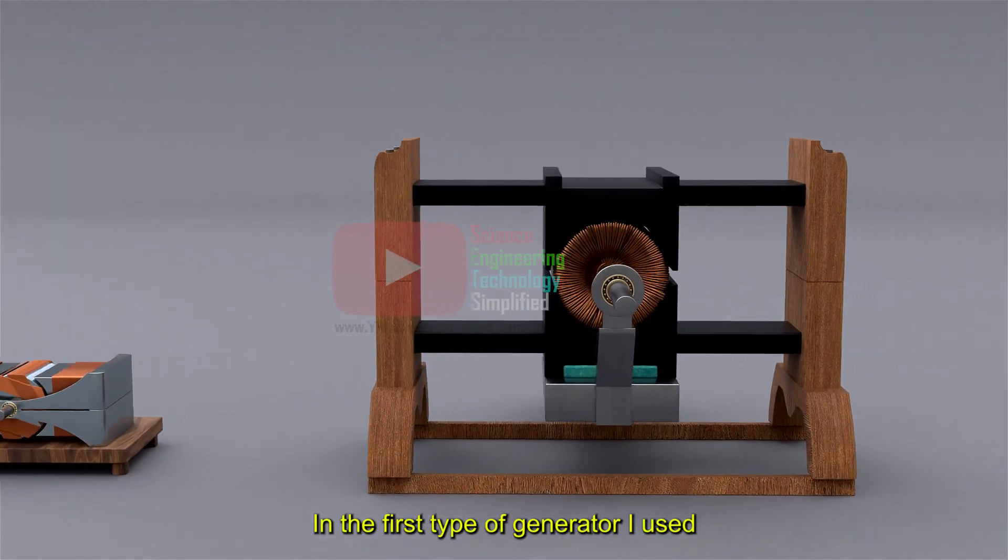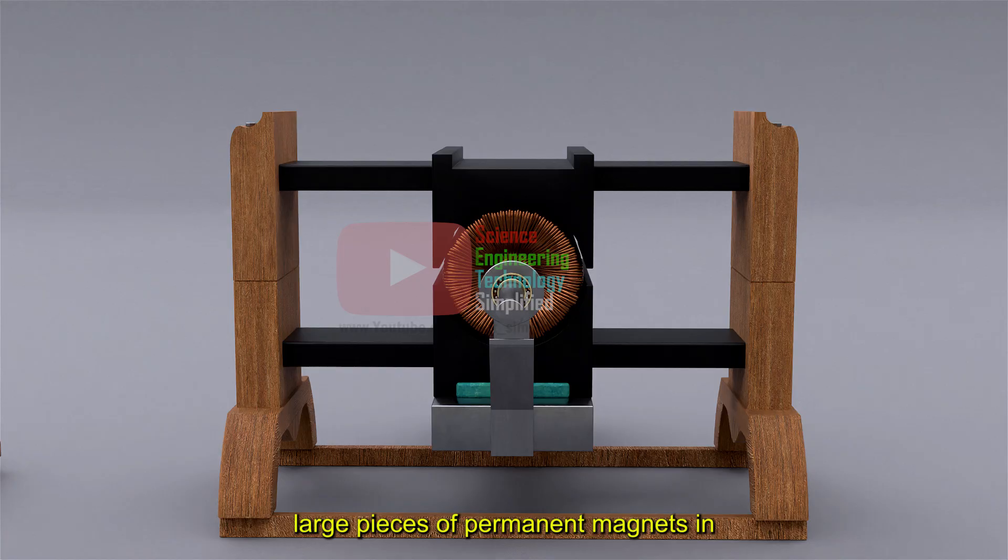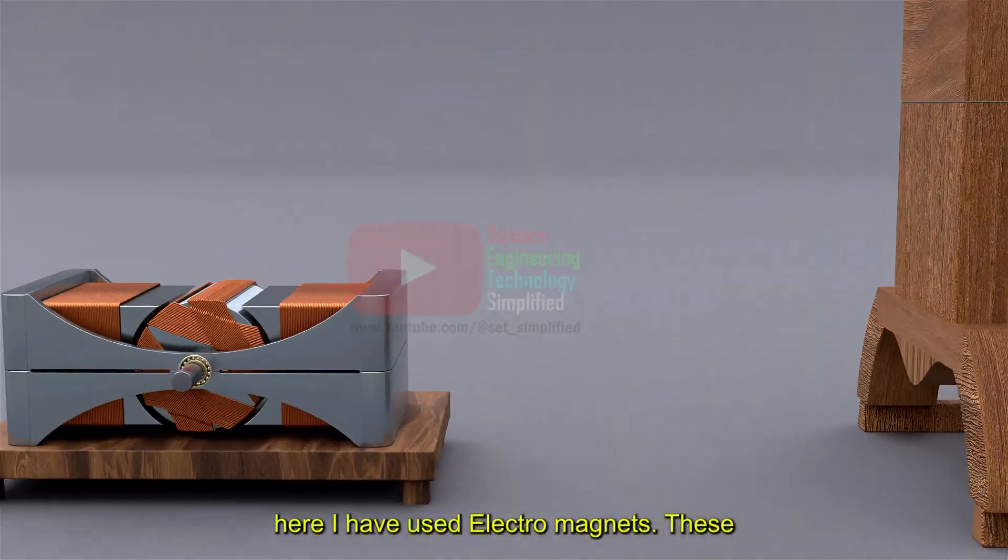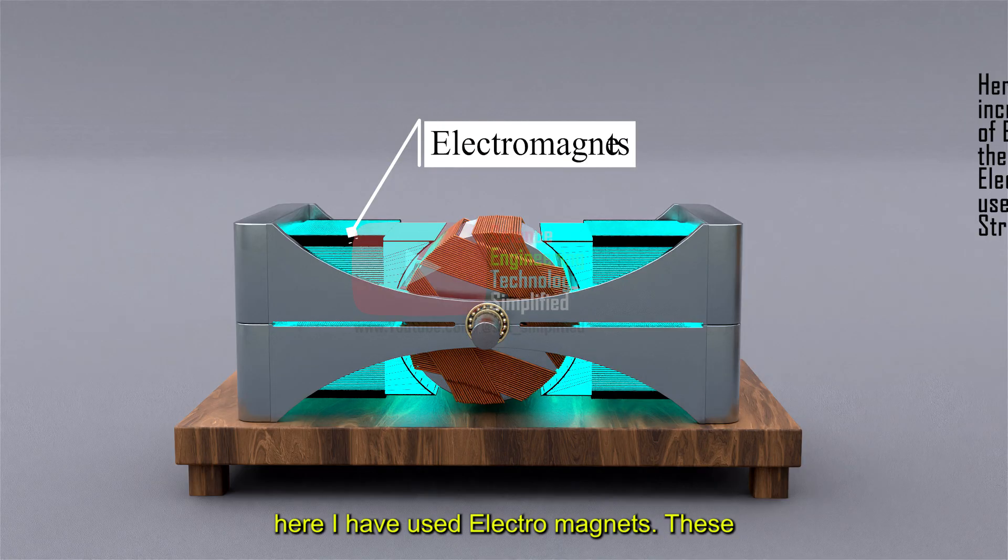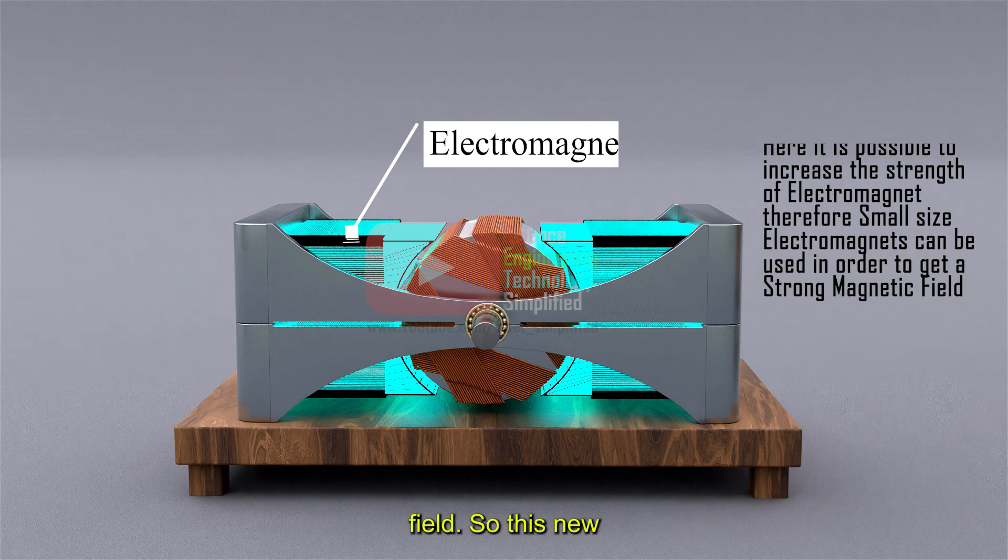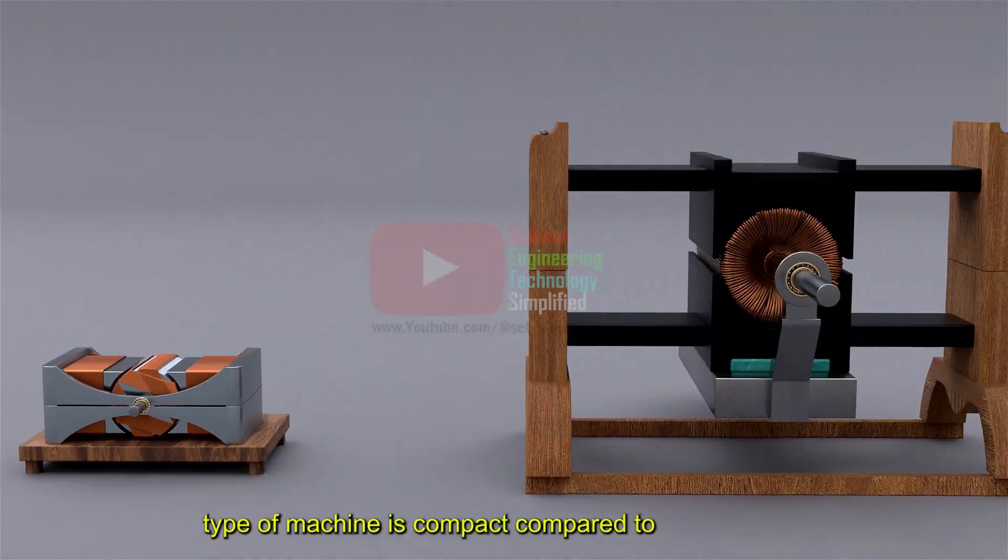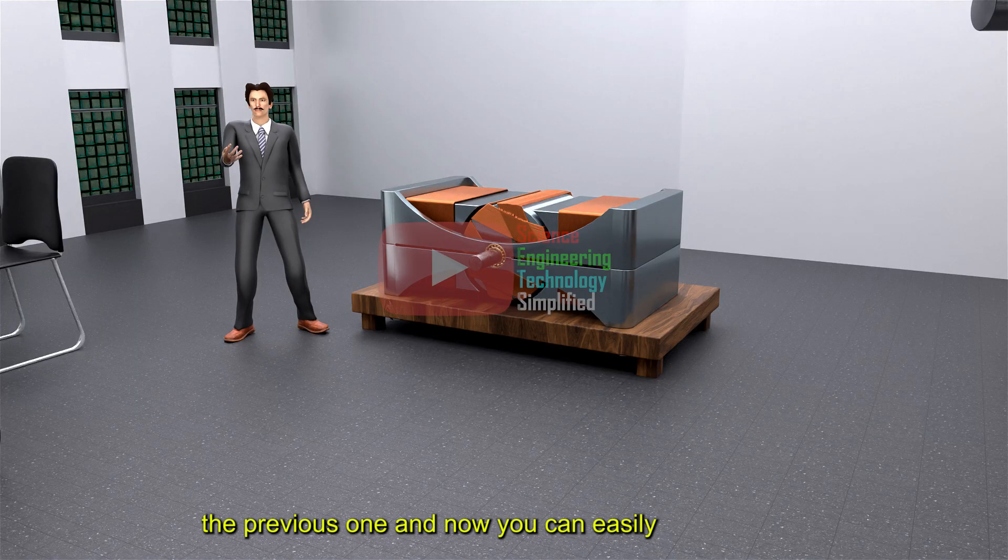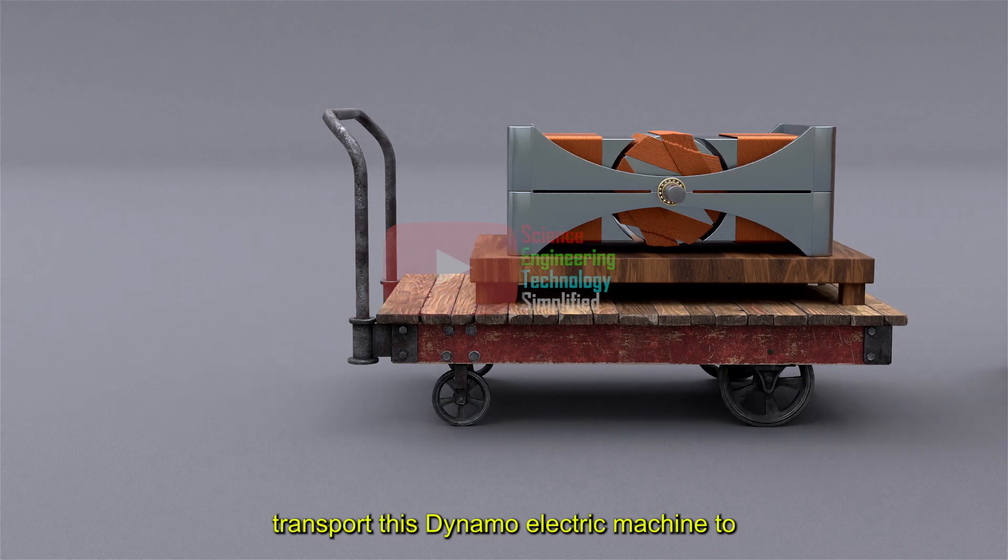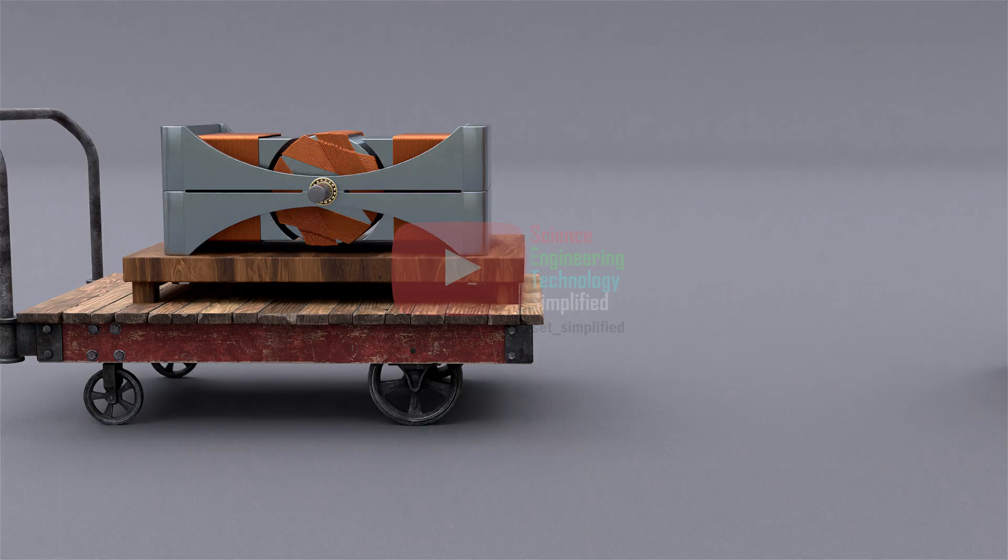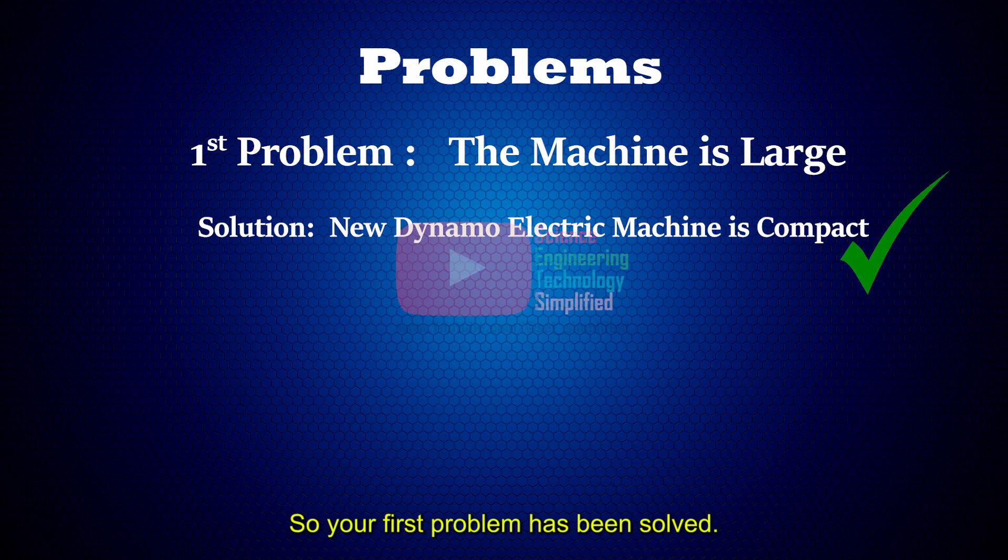In the first type of generator, I used large pieces of permanent magnets in order to get a strong magnetic field, but here I have used electromagnets. These electromagnets are small in size but can generate the same amount of magnetic field. So this new type of machine is compact compared to the previous one, and now you can easily transport this dynamo electric machine to your desired location. So your first problem has been solved.